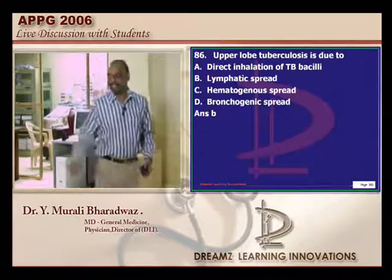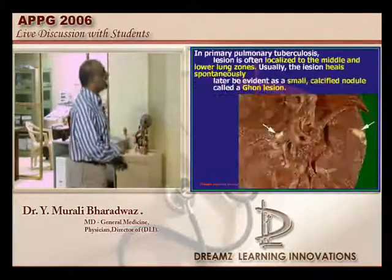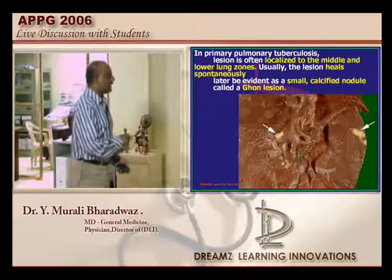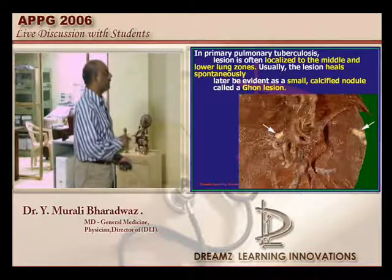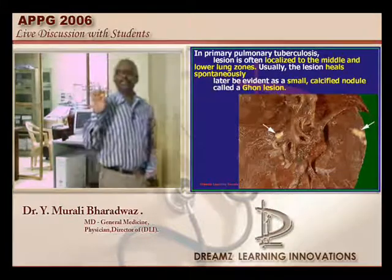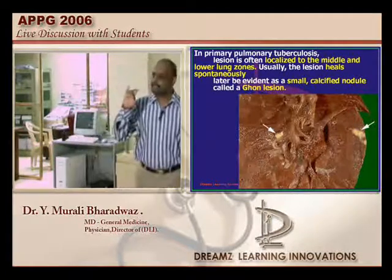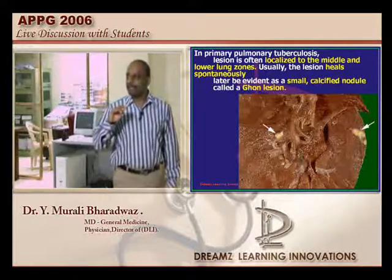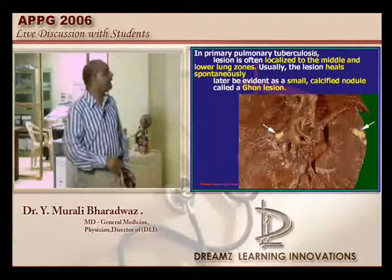This is an example of a Ghon's complex, where hilar lymphadenopathy plus parenchymal lesions can coexist. What are the two differences between primary and post-primary TB? Presence of cavitation and absence of hilar lymphadenopathy — these differentiate post-primary from primary tuberculosis.